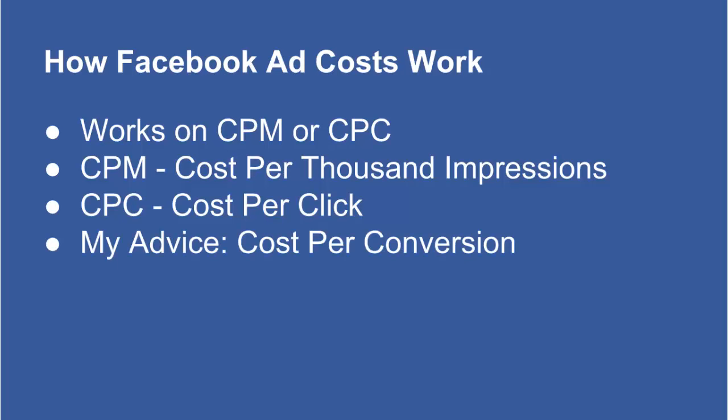My advice is to forget all that and focus on the cost per conversion model. It's a selection when you start your campaign. Look for the option that says cost per conversion. When you use cost per conversion you have a strategy — you know what you want to get out of Facebook, and you're telling Facebook when they've done a good job. A conversion could be a sale, meaning you're directly selling on Facebook, but I do not recommend that because it flat-out won't work.